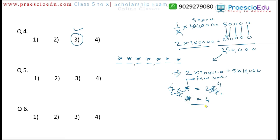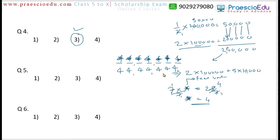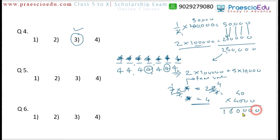Now all digits are 4, so the number is 44,44,444. Find the product of the place values — tens place value is 40, and thousands place value is 4,000. Multiplying: 40 × 4,000. The zeros carry over and 4 × 4 = 16, giving 1,60,000. This 1,60,000 is mentioned in option number 1, so option number 1 is the correct one.